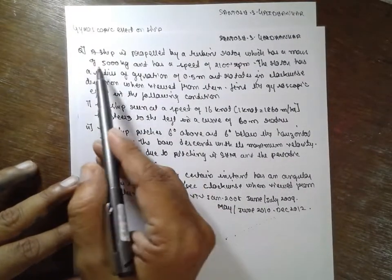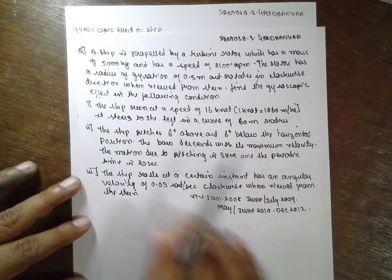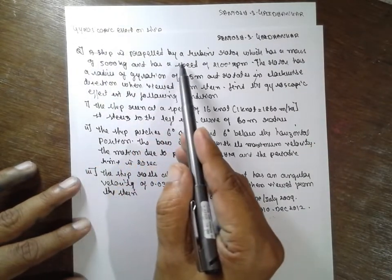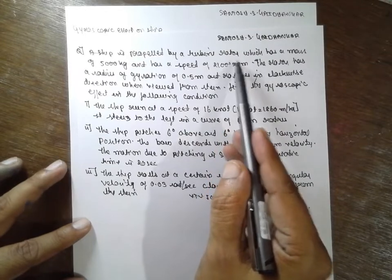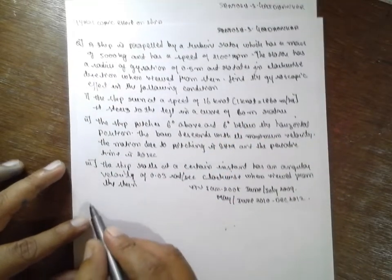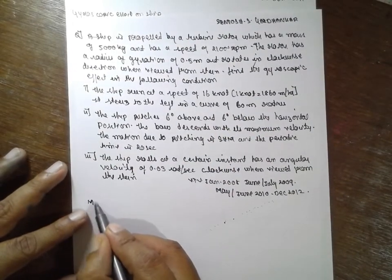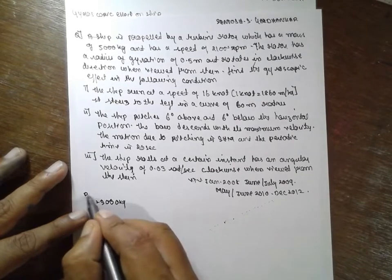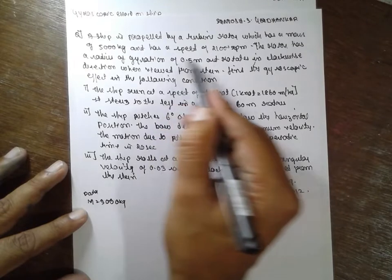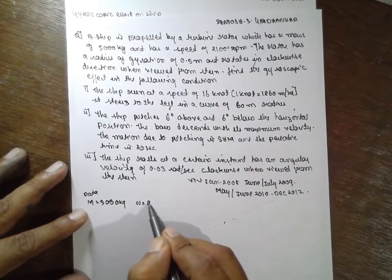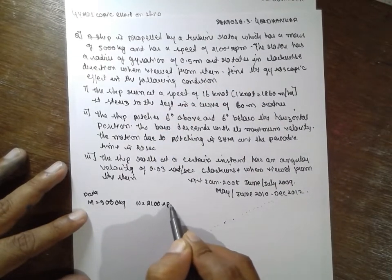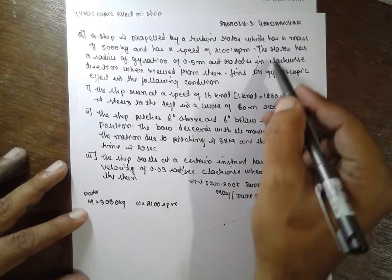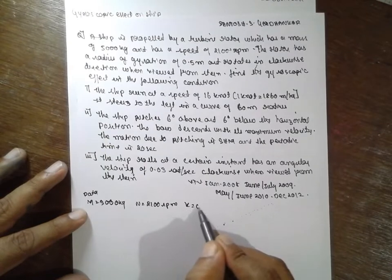This is a problem. It is a very important problem. Most of the VTU has this problem. A ship is propelled by a turbine rotor which has a mass of 5000 kg and the speed of n is equal to 2100 rpm. The rotor has a radius of gyration k is equal to 0.5 meter.